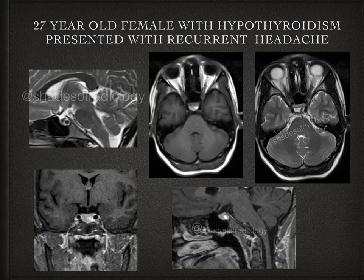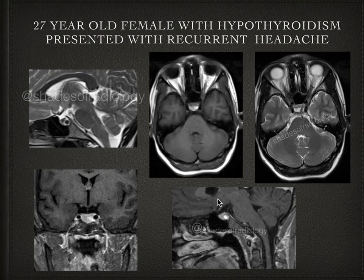These are the various sequences. This is the sagittal T2-weighted image. This is the axial T1-weighted image, and this is the axial T2-weighted image at the level of the sella. This is the coronal T1-weighted post-contrast, and this is also a sagittal T1-weighted post-contrast.